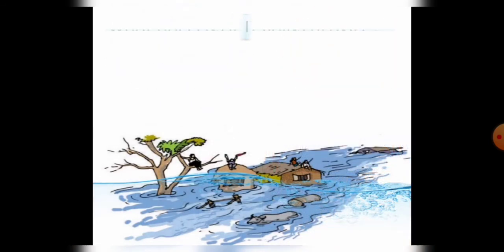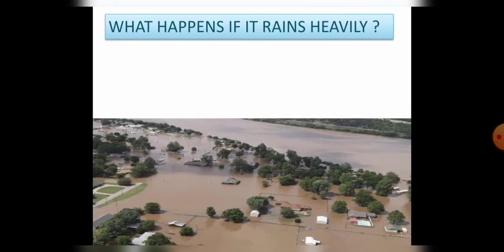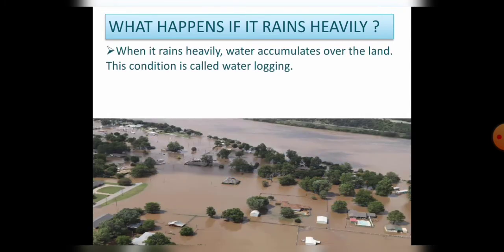Look at this picture and just imagine what will happen if it rains heavily. The water will accumulate over the land, and this condition is called waterlogging. Here in the given picture you can see waterlogging.